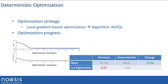First we do a deterministic optimization to find the deterministic optimum. Starting from an original mass of 31.12 kg with the first eigenvalue at 0.67 — not satisfying the constraint — through this optimization we managed not only to reduce the mass but also to fulfill the eigenvalue constraint, achieving a mass reduction of about 10%. As it's a relatively simple problem for our technology, we use a gradient-based method with an algorithm called NLPQL.